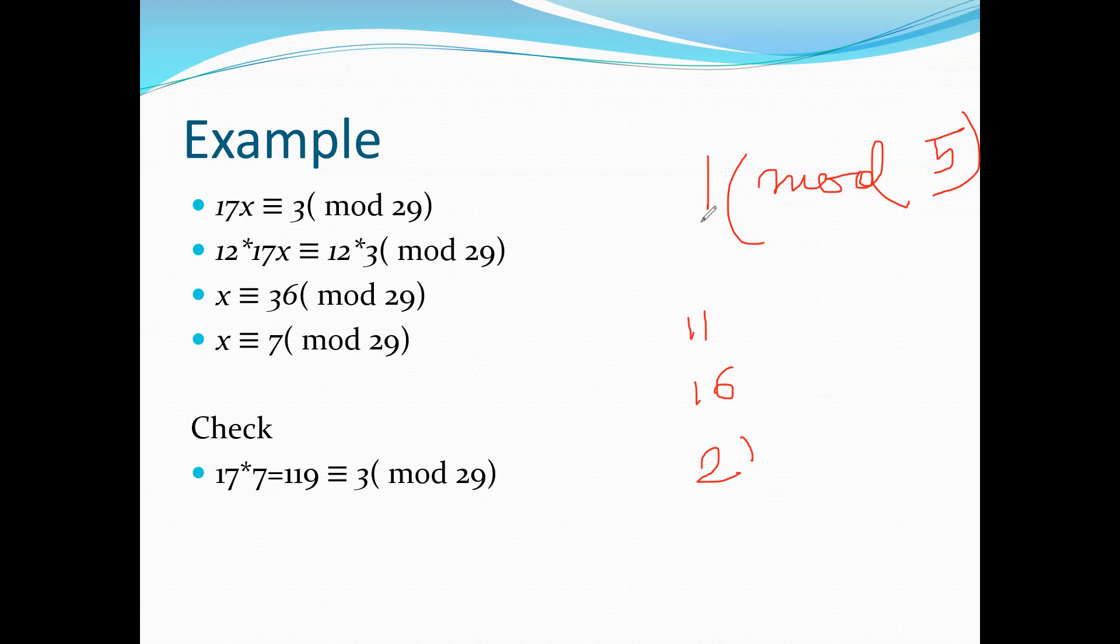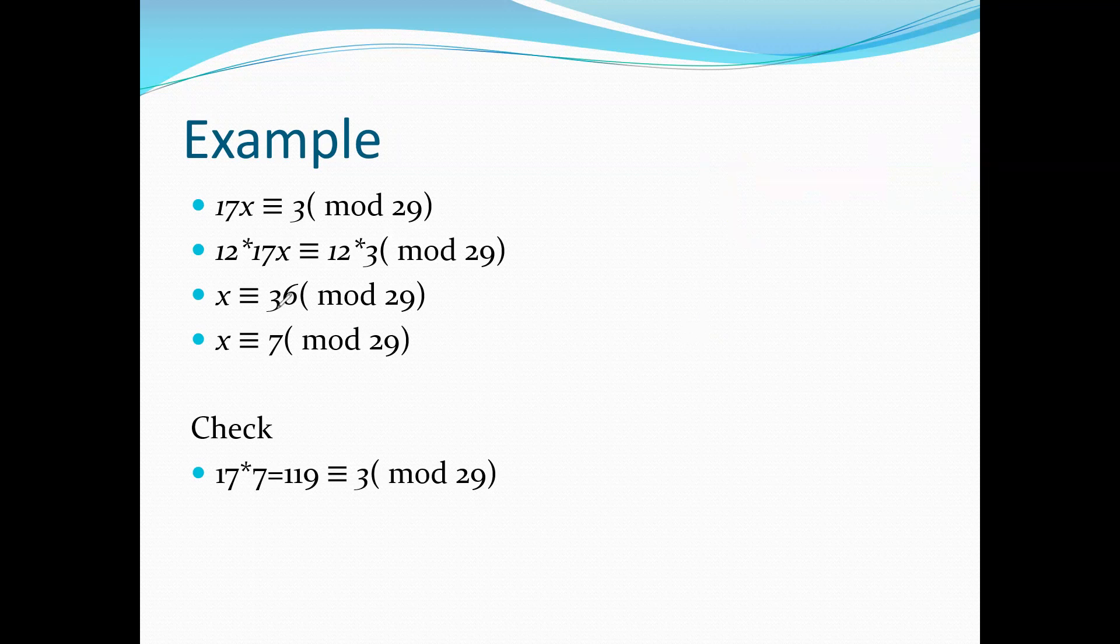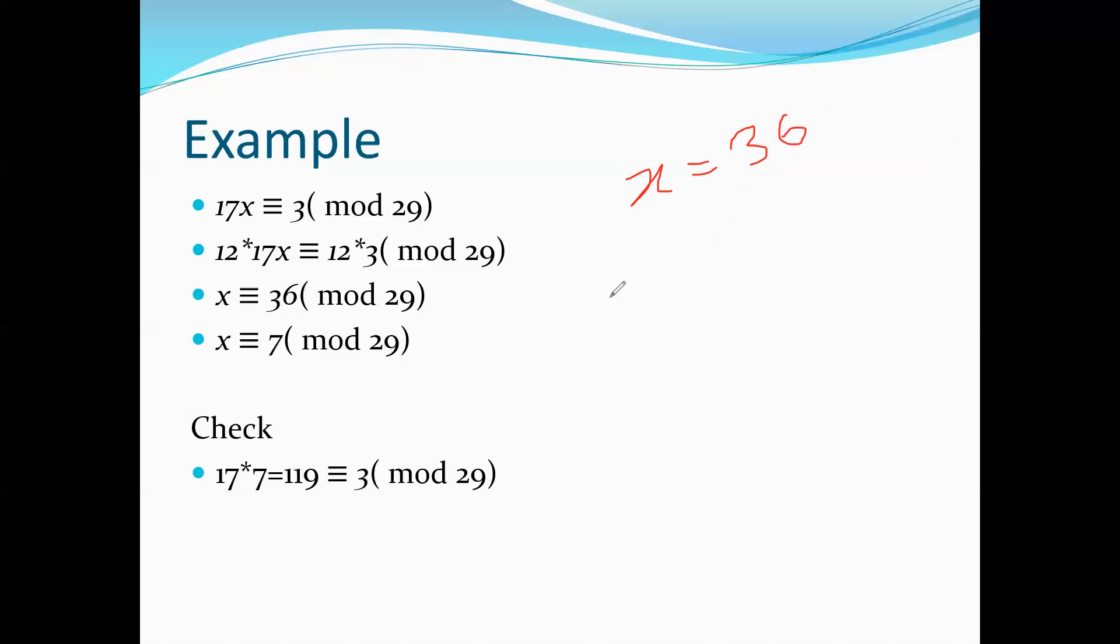Find the smallest x that satisfies this. We need to find a value. If we take a multiple of 29 and add 3, x equals 36. Or generally, x can be written as 7 mod 29. Let me apply this.